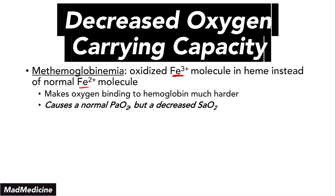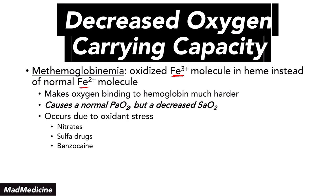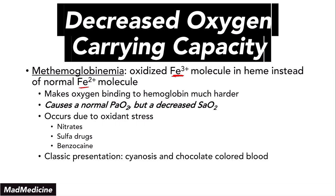Classic conditions causing methemoglobinemia involve oxidative stress. On your exams, the classic presentation involves someone who has taken certain drugs like nitrates, sulfa drugs, or benzocaine. This leads to cyanosis and chocolate colored blood, which is pathognomonic for methemoglobinemia.